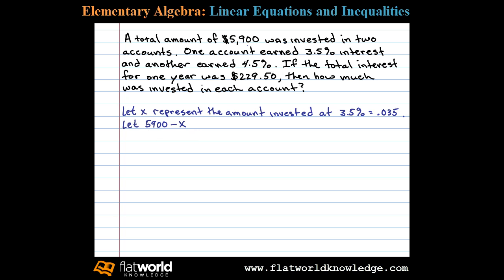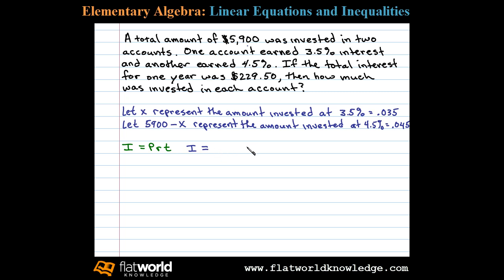Now we can use the formula for interest: interest equals the principal times the rate times the time. Using this formula, we can determine an algebraic expression for the interest in each account. In the first account, the principal is X, times the rate — three and a half percent written as a decimal is 0.035 — and it's invested for one year. So the actual amount of interest in that account is 0.035X.